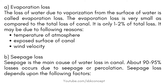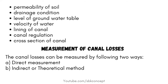Evaporation loss may be due to the following reasons: temperature of atmosphere, exposed surface of canal, and wind velocity. Seepage is the main cause of water loss in a canal. About 90–95% of losses occur due to seepage or percolation. Seepage loss depends upon the following factors: permeability of soil, drainage condition, level of groundwater table, velocity of water, lining of canal, canal regulation, and cross section of canal.